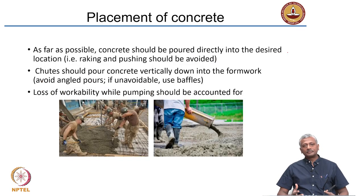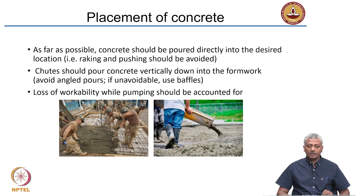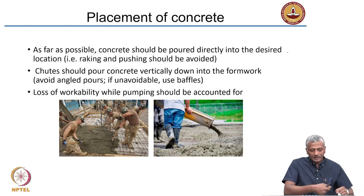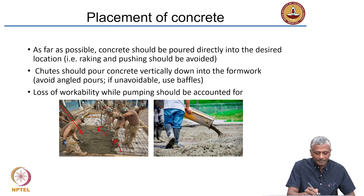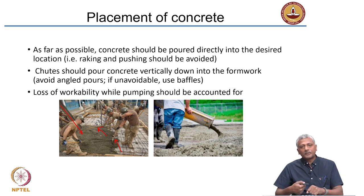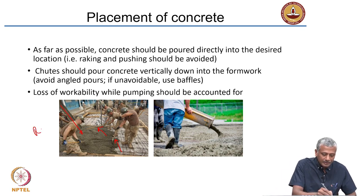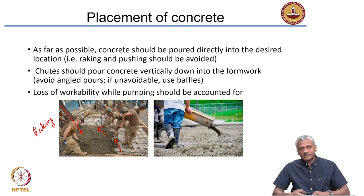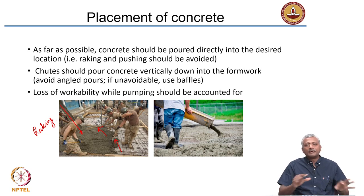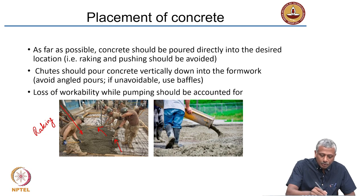After conveying the concrete, you are going to be placing it in the formwork. As far as possible, concrete should be poured directly into the desired location — you do not want to pour it at one end and then rake it. Raking is the process of pulling concrete to different locations, and when concrete is highly workable there is a tendency for segregation to happen. Therefore, the chute should be moved around and placed directly where the concrete is required.